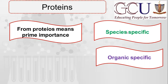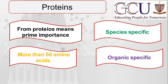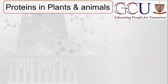Dear students, proteins contain more than 50 amino acids. If there are fewer than 50 amino acids, we give names like polypeptide or oligopeptide. So proteins have more than 50 amino acids, which means their molecular mass is very high.